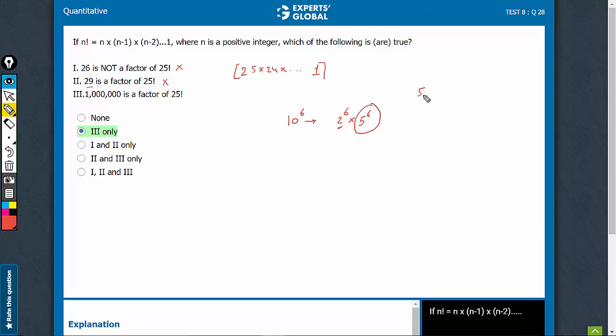So see, 5, 10, 15, 20, they would each have 1 5 in it. So they would leave a 5 raised to power 4 and 25 has 2 5s in it, 5 raised to power 2.